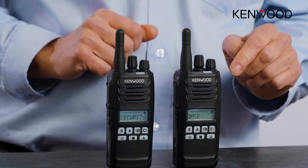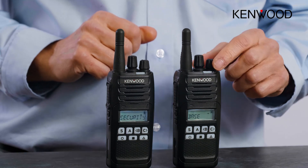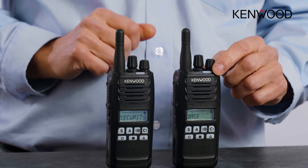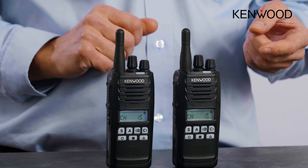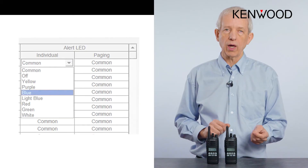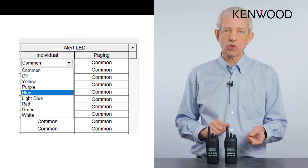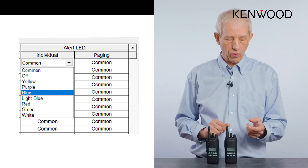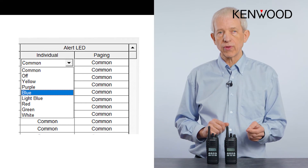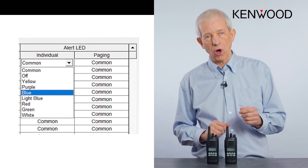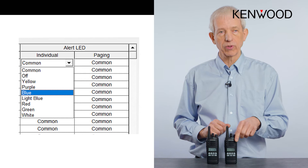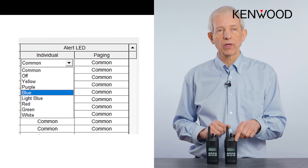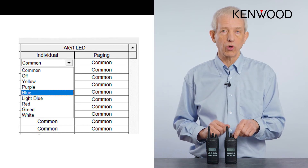You'll also notice when the individual call is set up that the LED on the top here was flashing blue. That's a configurable item — you can decide which color it will go when it's an individual call or a group call. That's very useful because the operator can easily look down from the top, see the color of the LED, and know whether it's an individual call or a group call.